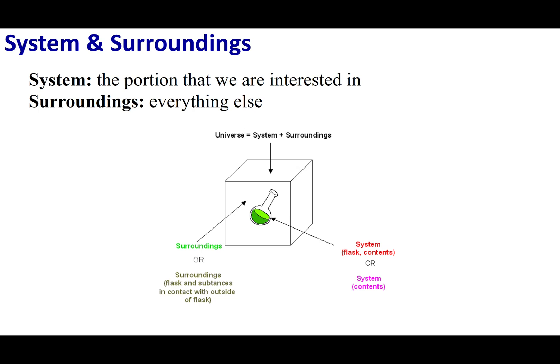The next thing we have to do is we have to go ahead and separate our world. In thermodynamics, what's really important is we have to talk about what we consider the system and what we consider our surroundings. When we start talking about thermodynamics, we are going to split the world into these two parts. The system is going to be everything that we are interested in. If we are talking about a chemical reaction, the chemicals in my flask, that's my system. That's what I'm interested in. Everything else is going to be considered my surroundings.